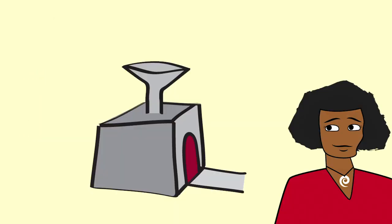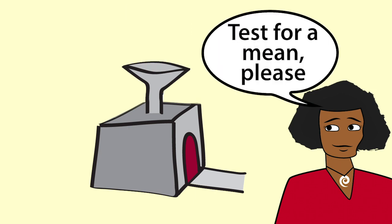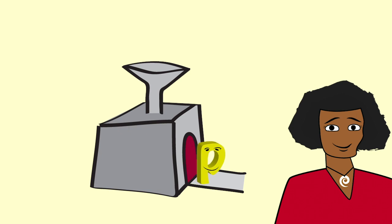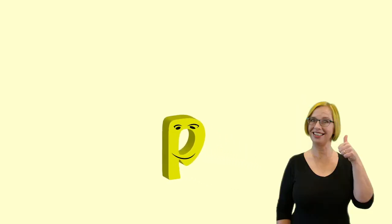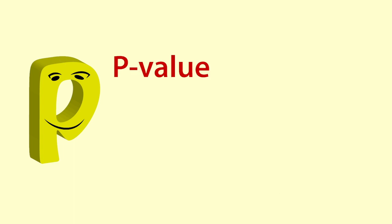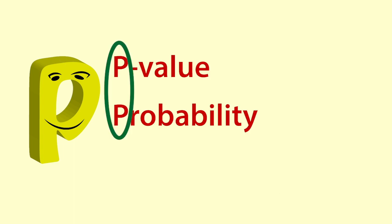Normally you just get a computer to find the p-value. You put in the data, tell the computer what you want to test for, and out comes the p-value. However, it is good to have an understanding of what a p-value actually is. A p-value is a probability. That is what the p stands for.